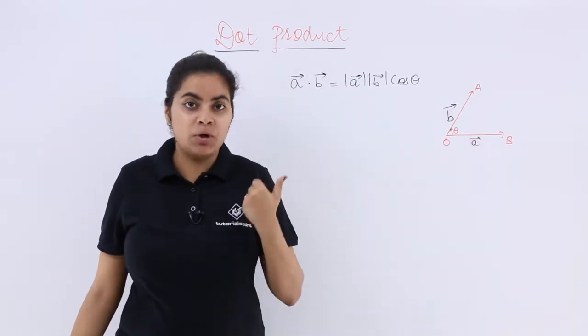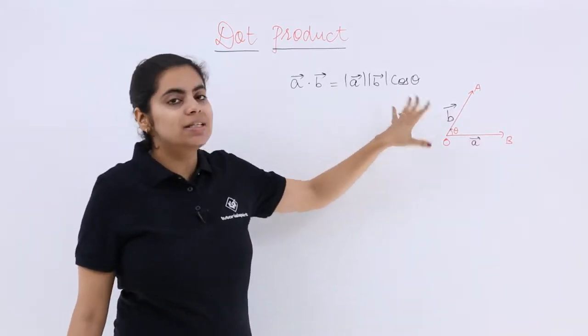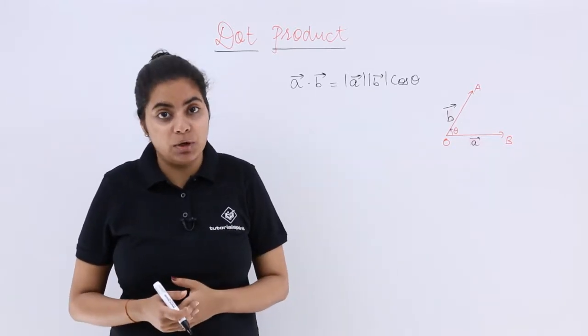Why is it called as scalar product? Because there is no question of direction. These both are magnitude. Cos theta also will be a number only. So magnitudes come out. Hence it is called as a scalar product.